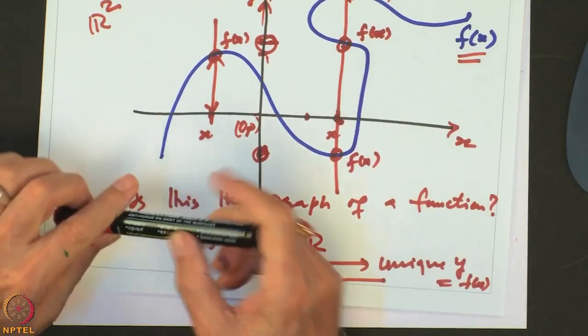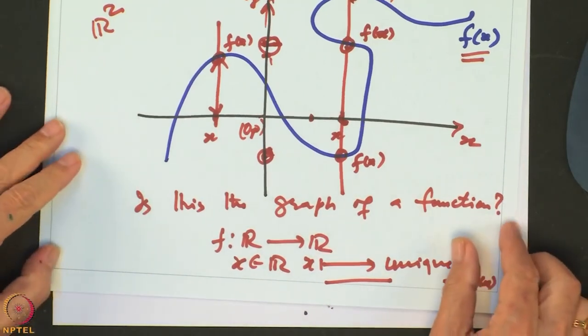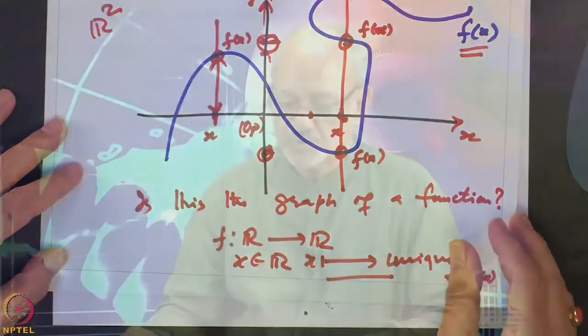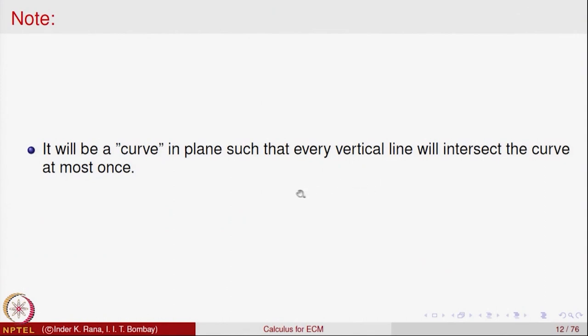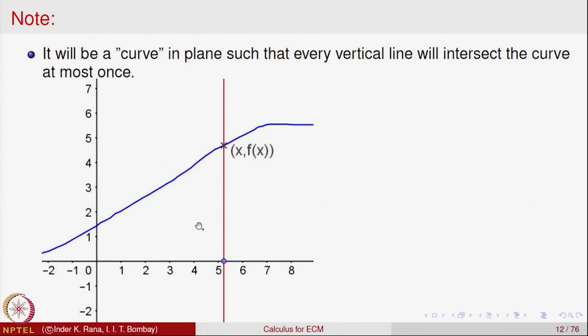So a test for a curve to be the graph of a function is that every vertical line should intersect the curve at most at one point. A curve in the plane such that every vertical line intersects it at most once will be the graph of a function. Not every picture in the plane is the graph of a function — this is called the vertical line test.